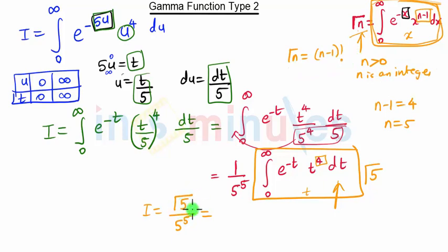So 5 is an integer and greater than 0, so gamma of 5 equals 4 factorial upon 5 raised to 5. This is our final answer. 4 factorial is 24 and 5 raised to 5 is 3125.